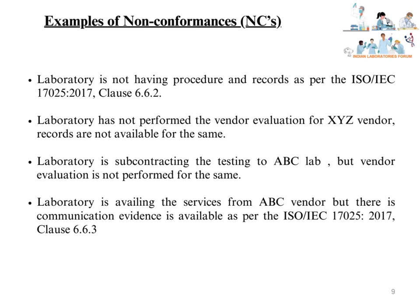Some examples of non-conformances as per Clause 6.6: The laboratory does not have a procedure and records as per ISO/IEC 17025:2017 Clause 6.6.2. The laboratory has not performed vendor evaluation for XYZ vendor and records are not available. The laboratory is subcontracting testing to ABC Lab but vendor evaluation has not been performed. The laboratory is availing services from ABC vendor but no communication evidence is available as per ISO/IEC 17025:2017 Clause 6.6.3.